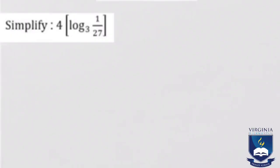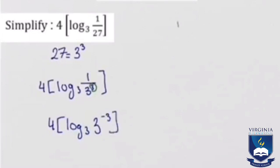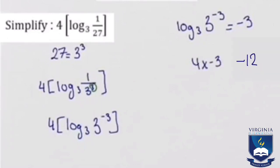Simplify 4 times log base 3 of 1 over 27. Now 27 equals 3 to the power of 3, so 1 over 27 equals 3 to the power of negative 3. So we have 4 times log base 3 of 3 to the power of negative 3. Log base 3 of 3 to the power of negative 3 equals negative 3, so 4 times negative 3 equals negative 12. The answer is negative 12.